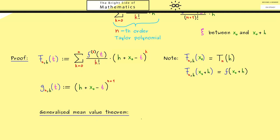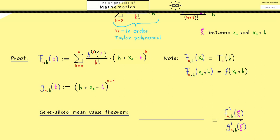Recall that the generalized mean value theorem translates differences in a quotient to a quotient of derivatives. On the right-hand side we have the derivatives of capital F and g evaluated at some intermediate point xi. Because we know where xi should lie, we know what the difference is: in the numerator we have F at position x0 plus h minus F at position x0, and in the denominator the same for g.